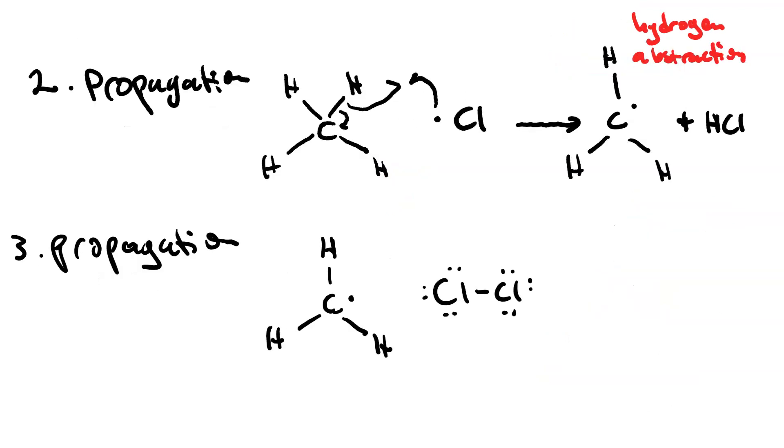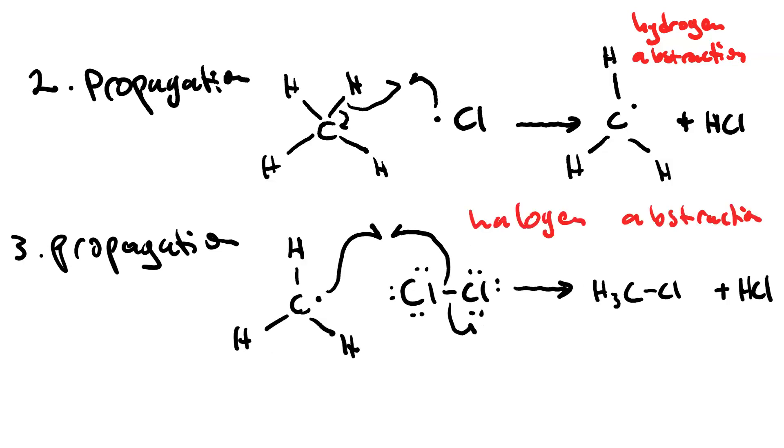Our third step is also propagation. The methyl radical created in step 2 does halogen abstraction on another molecule of chlorine gas. The result of this halogen abstraction is the chloromethane and not hydrochloric acid, but another chlorine radical.